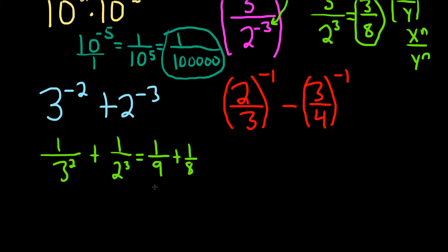An easy way to find the LCD here is to multiply these numbers. 9 times 8 is 72. So we can do 1 over 9 times 8 over 8, multiply by 1 in a clever way, plus 1 over 8 times 9 over 9.